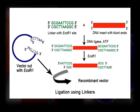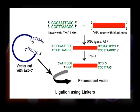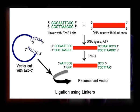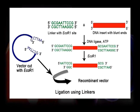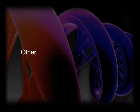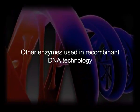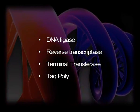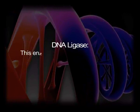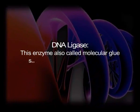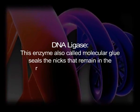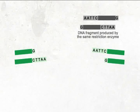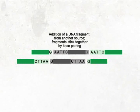In cases where blunt ends are generated, sticky ends can be artificially produced by the enzyme terminal transferase or by addition of linkers or adapters on both sides of the target DNA. There are other enzymes important in recombinant DNA technology, such as DNA ligase, reverse transcriptase, and Taq polymerase. DNA ligase is also called molecular glue and seals the nicks that remain in the recombinant DNA molecule by catalyzing the formation of phosphodiester bonds between the 5'-phosphate and 3'-OH of two adjacent nucleotides.